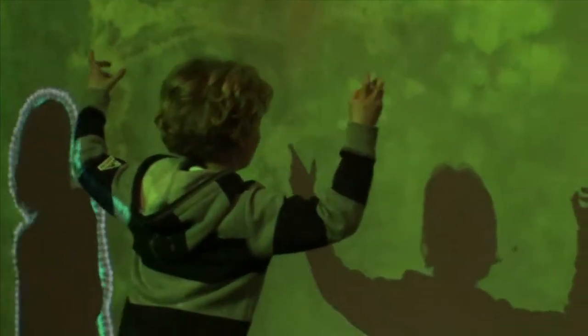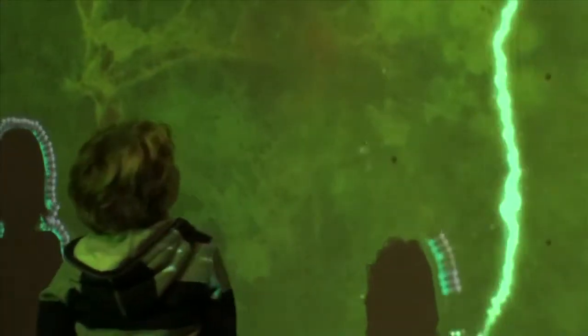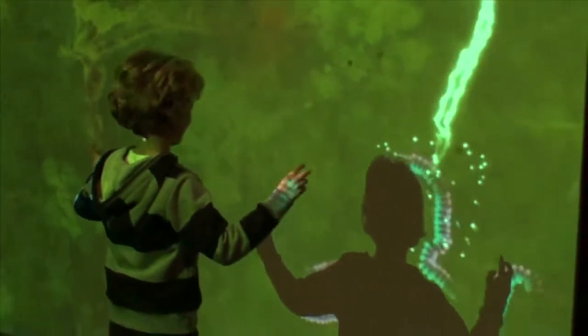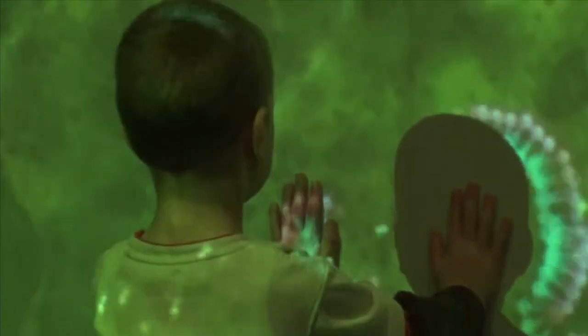As people step into the projection, lightning strikes their shadows and cell walls begin to form, sticking to the outline of their bodies. With each successive lightning strike, the cell wall grows more complete.